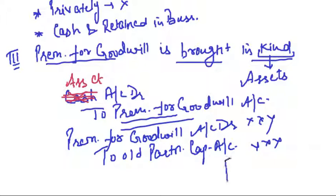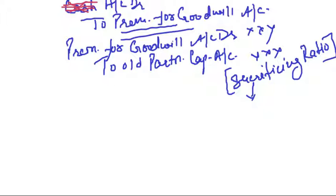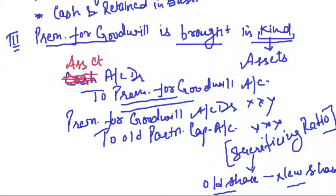In which ratio is the premium distributed? In the sacrificing ratio. The sacrificing ratio is old share minus new share. So nothing major changes in this case — the premium for goodwill is brought in kind, and instead of cash, we write only the name of the asset that has been brought in. If he brings the premium in cash, we write cash; if not, we write the asset name as: Asset Account debit to Premium for Goodwill Account. Then this premium for goodwill will be adjusted through the old partners' capital accounts in the sacrificing ratio.